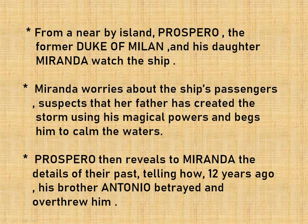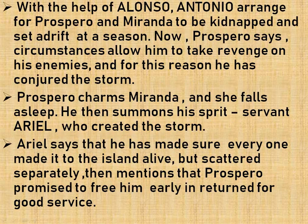Prospero then reveals to Miranda the details of their past, telling how 12 years ago his brother Antonio betrayed and overthrew them. With the help of Alonso, Antonio arranged for Prospero and Miranda to be kidnapped and set adrift at sea. Prospero says circumstances now allow him to take revenge on his enemies, and for this reason he has conjured the storm.